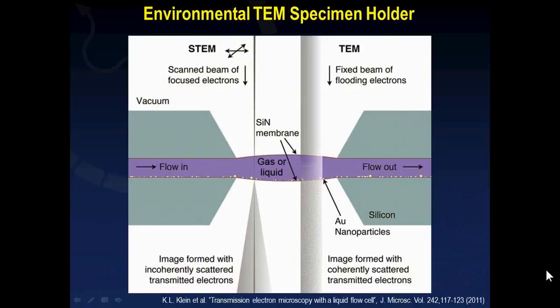The schematic of a specialized environmental TEM holder consists of a pair of electron-transparent windows above and below the specimen. The specimen is usually dispersed on a membrane inside the sandwich window, within which one can introduce gas or liquid. The windows isolate the liquid or gas environment from the high vacuum of the transmission electron microscope.